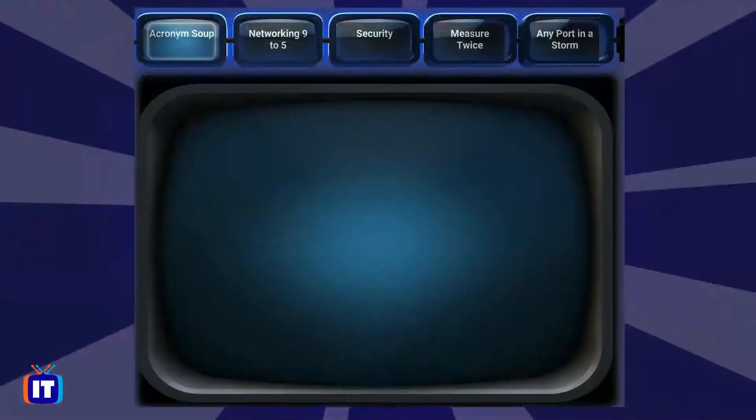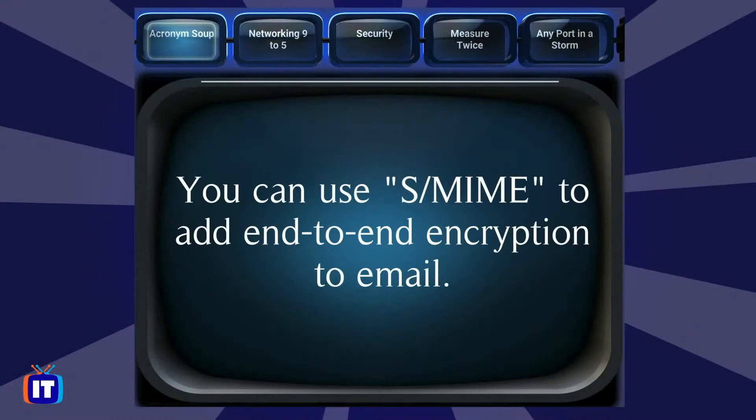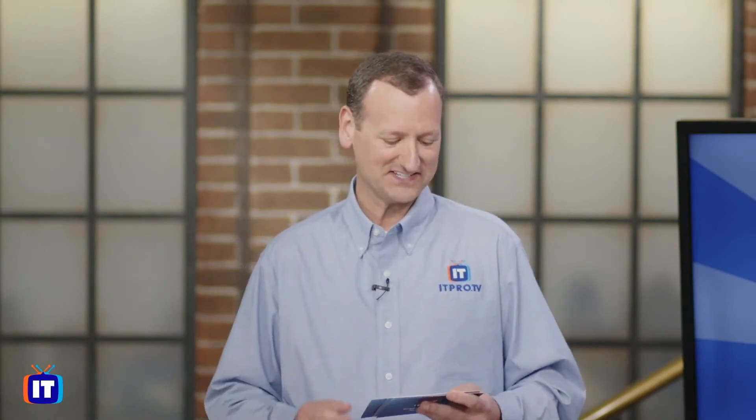Wes still has control. Acronym Soup for $500. You can use S-MIME to add end-to-end encryption to email. Adam answers: what is Secure Multipurpose Internet Mail Extensions? That is correct — an impressive answer that closes out the Acronym Soup category.